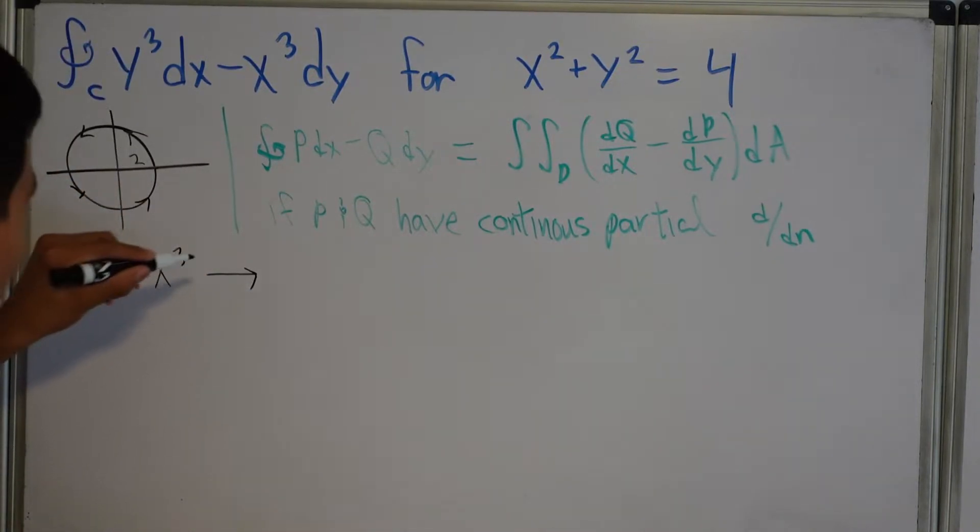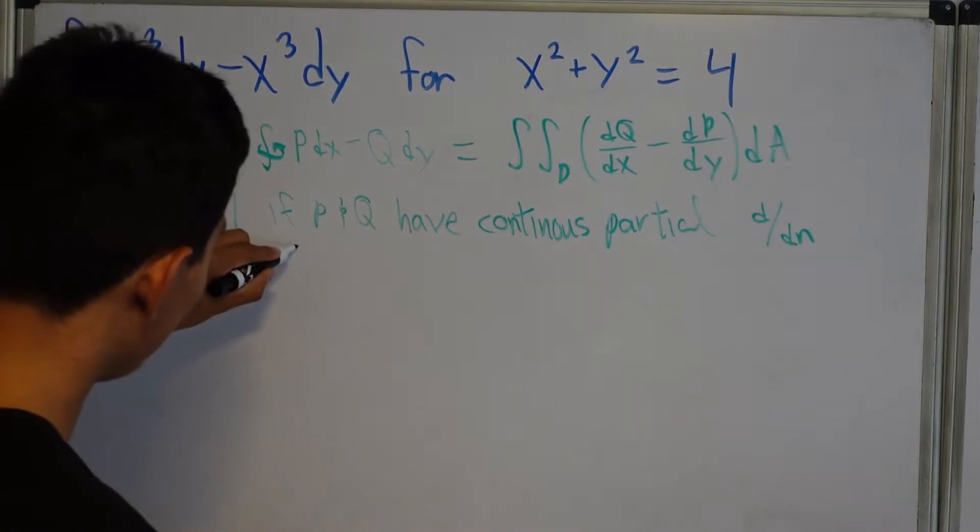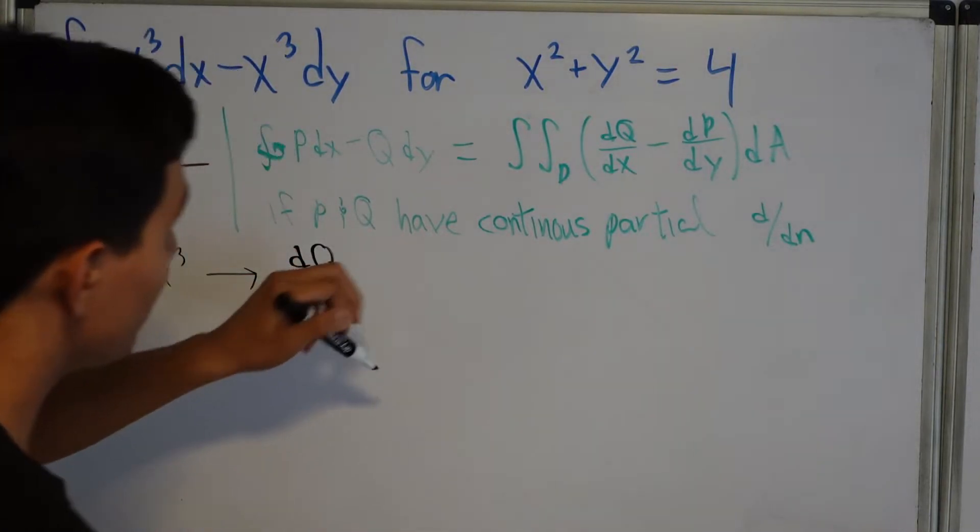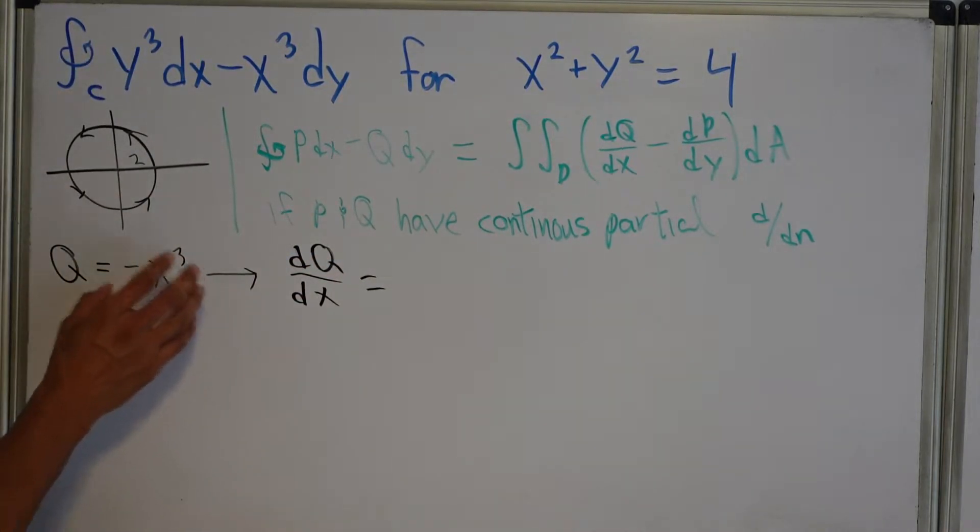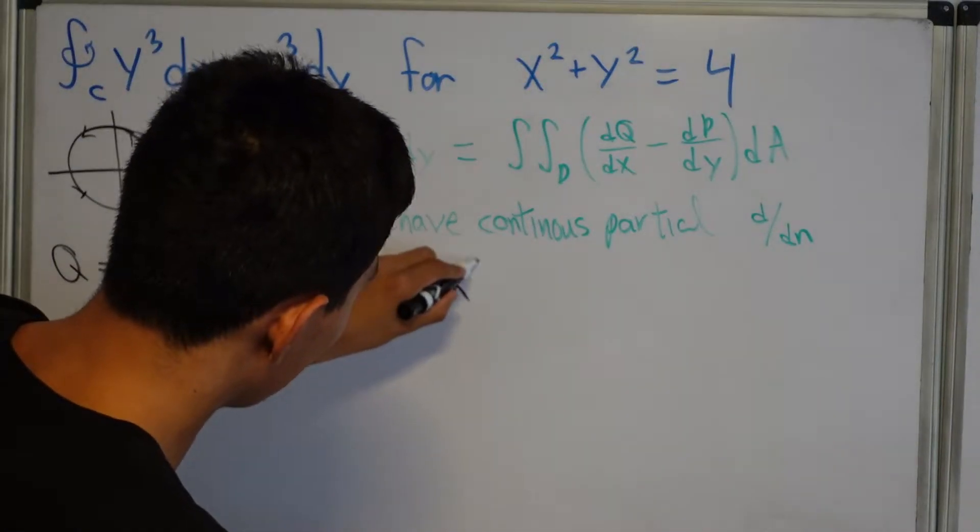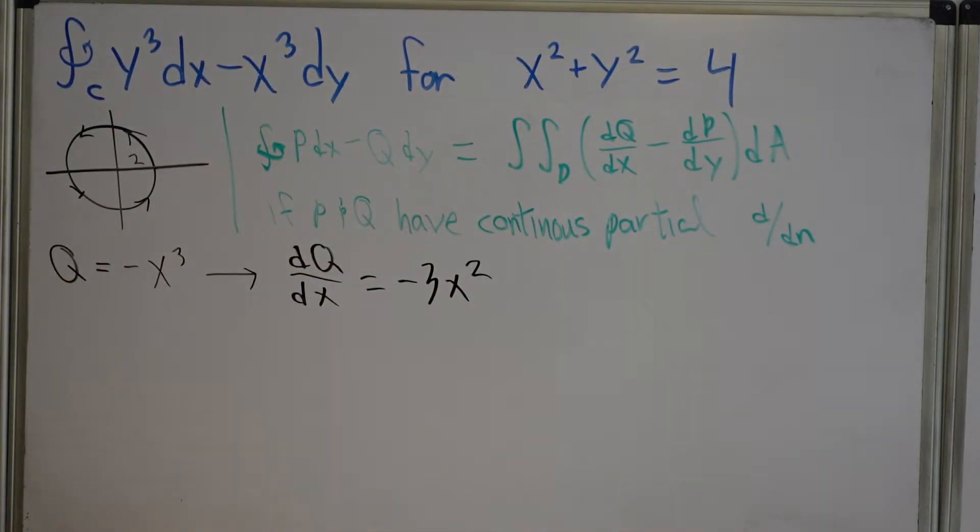And then what, dQ/dX, right? dQ/dX, well, dQ/dX is the derivative of this with respect to X, which is negative 3X squared. Okay, that's all very useful.